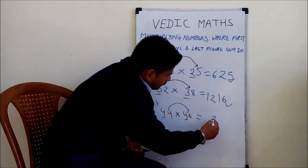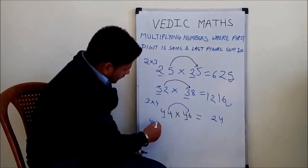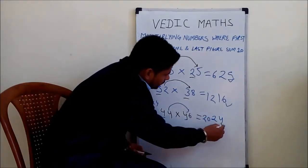So we multiply 4 into 6 equals 24, and we multiply 4 into the next number, that is 4 into 5 equals 20, giving us 2024 as the answer.